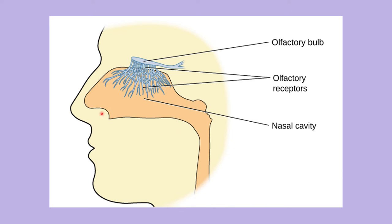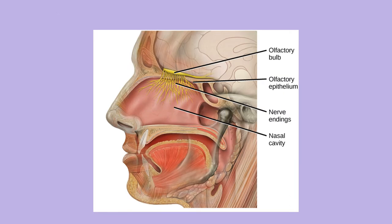When you sniff, that increases the amount of air into the nasal cavity, allowing it to swirl around more in the upper nasal cavity where the receptors are, giving you a better chance of stimulating them. The upper nasal cavity has ridges that help swirl the air when you take in a big breath, which increases the chance of stimulating these olfactory nerve endings.